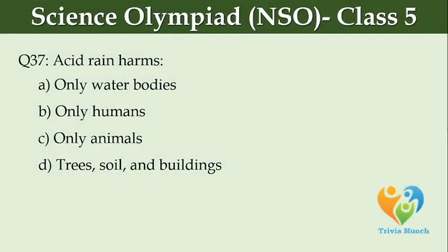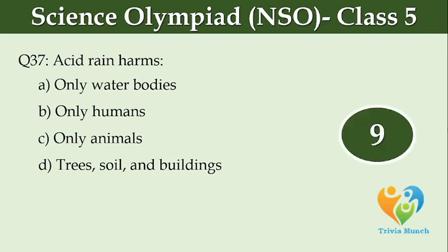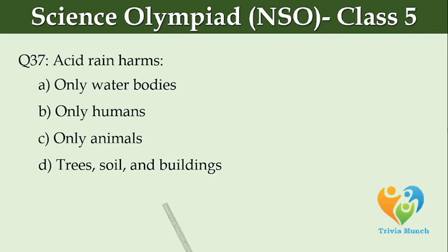Acid rain harms dash. Option A: only water bodies, Option B: only humans, Option C: only animals, Option D: trees, soil and buildings.